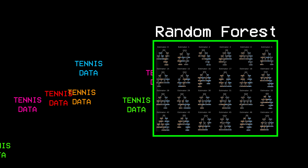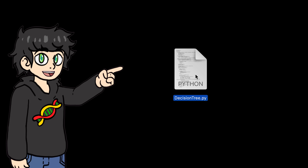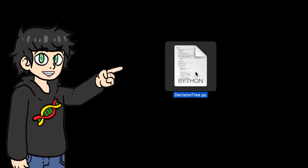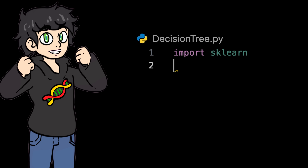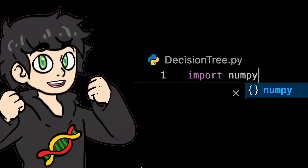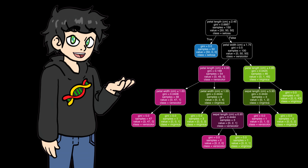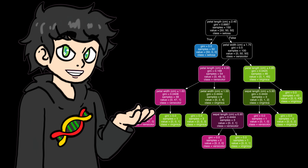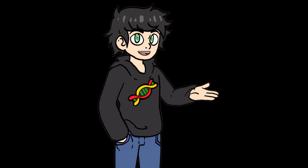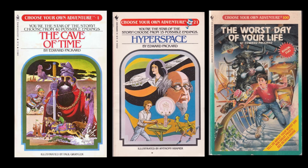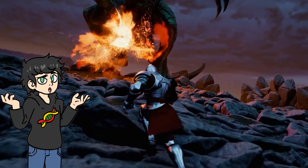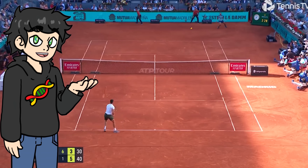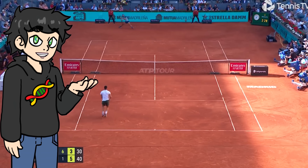But before using this data, I want to try building a decision tree from scratch — no scikit-learn, no PyTorch, just my good old friend NumPy and me. And decision trees are pretty awesome. Think of them like a choose your own adventure book, but instead of deciding whether you fight a dragon or run away, it's deciding who won a tennis match.